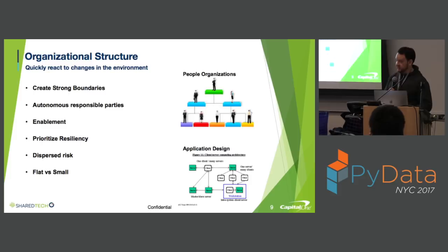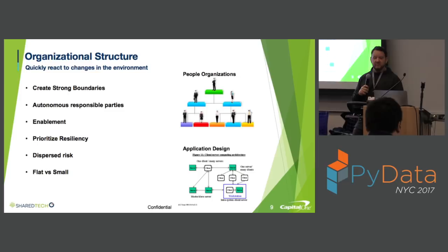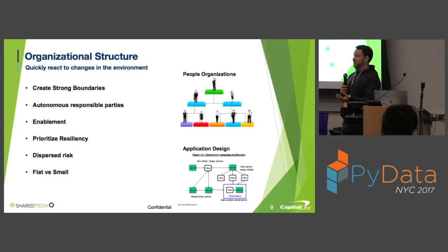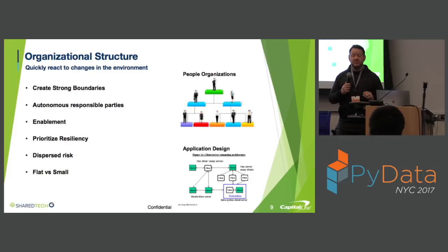Let's go into organizational structures. How can we build our teams to allow us to act faster? One thing to do is make sure that everybody knows who's responsible for what when a problem goes down — whether the responsible party is an individual, a group, or even an application. When we need a new feature delivered, which application should it be built in? If we have very clear, strong boundaries, we're going to understand who that is. There's no debate. Our reaction time is short.